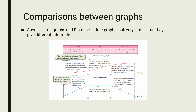Now we compare the speed versus time graph and the distance versus time graph. The red line shows the distance versus time graph and the blue line shows the speed versus time graph. A, B, C, and D are the different time intervals.